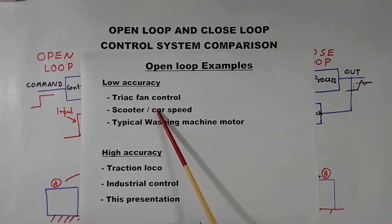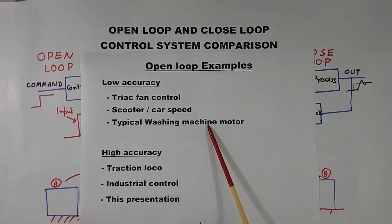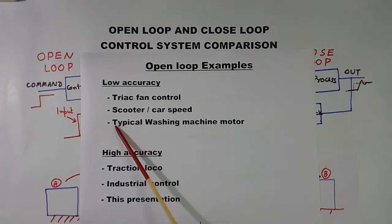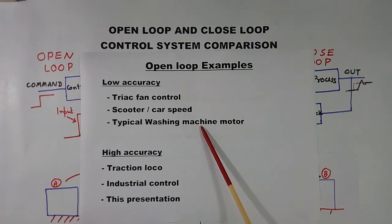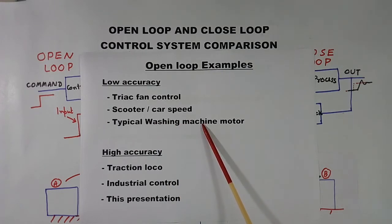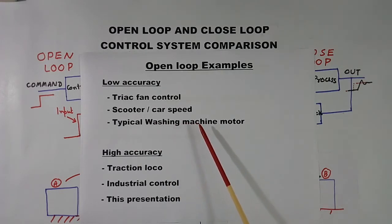But this comes under closed loop also. I will explain further. Typical washing machine motor. Typical washing machine motors, they operate on open loop. And they will start rotating. If load is more or voltage is less, their speed will reduce. Sometime they may even stop. This is I am talking about typical washing machine. Some complex washing machines are there. They have closed loop control also. So these are low accuracy systems. They are cheap. Typical washing machines are made for house to reduce the cost. But complex washing machines are more accurate. They have closed loop also.